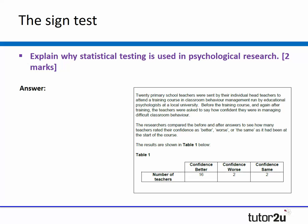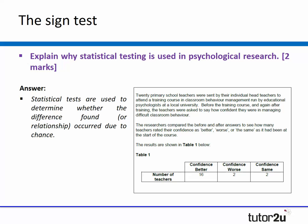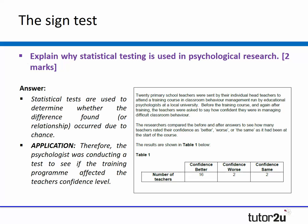There is an additional question that could go with this: explain why statistical testing is used in psychological research. It's a slightly different style of question, but there's a key because it says in psychological research. You're trying to explain it in relation to that particular study. I would encourage my students to apply their knowledge on a research method question like this. Statistical tests are used to determine whether the difference found or the relationship occurs due to chance or not. Therefore, the psychologist was conducting a test to see if the training program actually had an effect on the teachers' confidence level. That would easily pick up two marks.